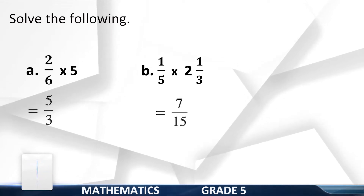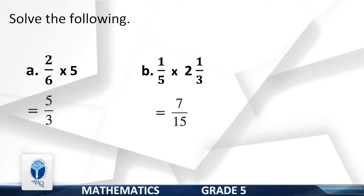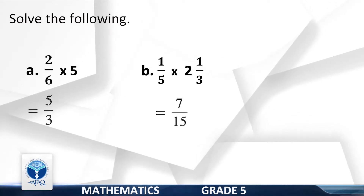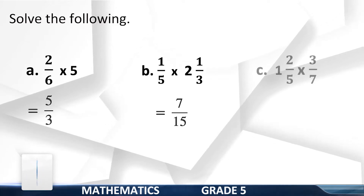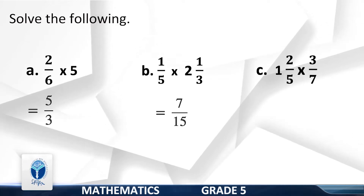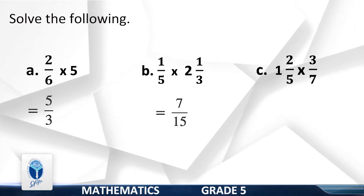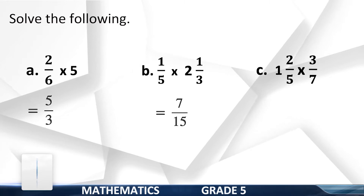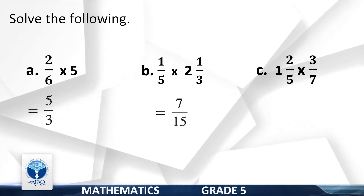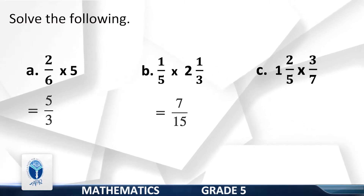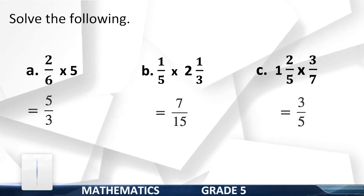Unit 4 — Major Concept: Multiplication and Division of Fractions. C: 1 whole 2/5 multiplied by 3/7. Yes, your answer is 3/5.